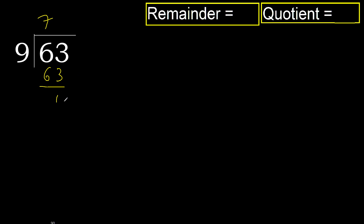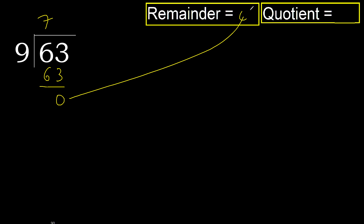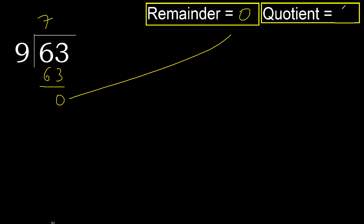Subtract — 0. Next, that is not a number, therefore finish it. The remainder is 0 and the answer is 7.